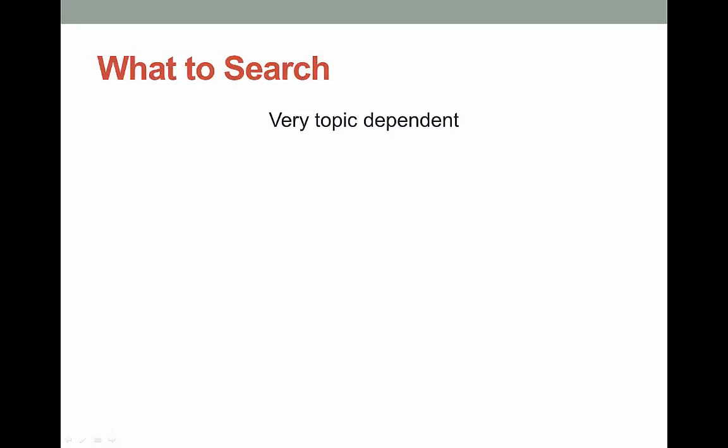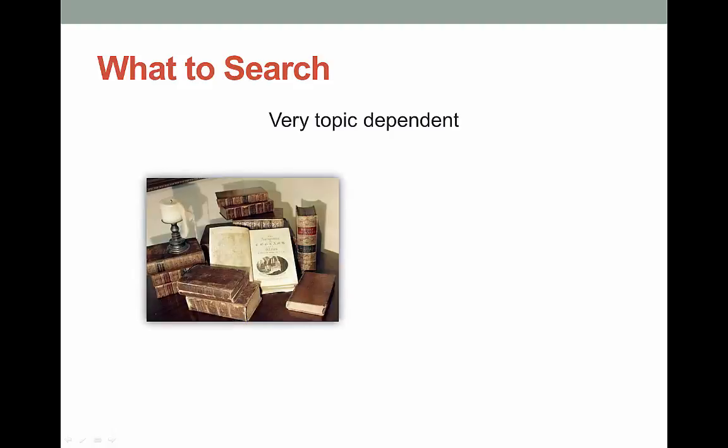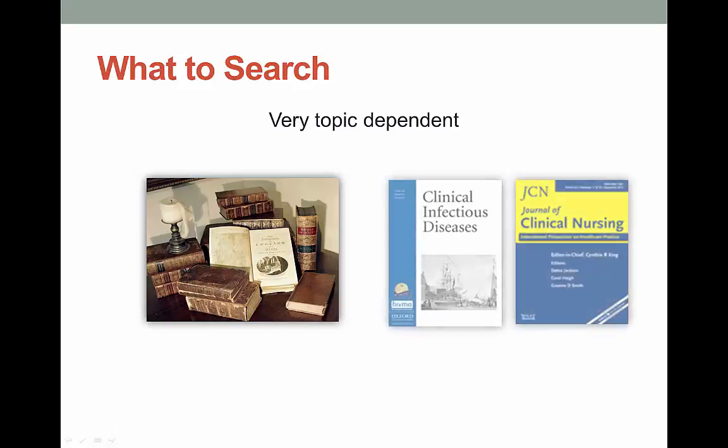First, it really depends on your topic or your area of study. If your topic is historical in nature, journal articles probably won't be your best bet — hit the books instead. If you're studying cutting-edge issues in medicine or healthcare, you're probably not going to focus on older textbooks. You may be looking solely at recent journal articles.